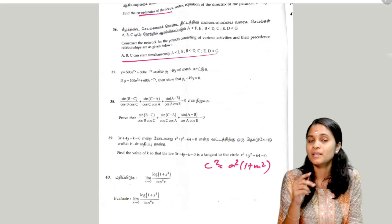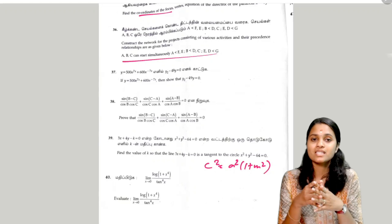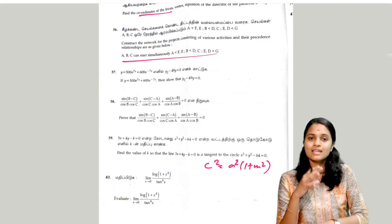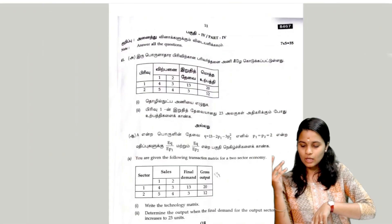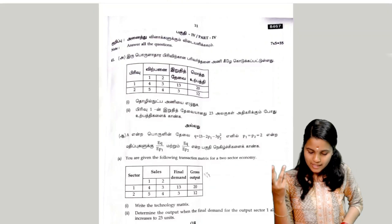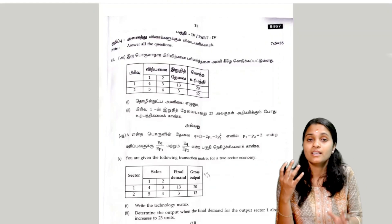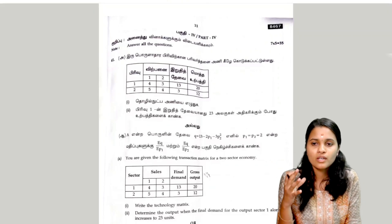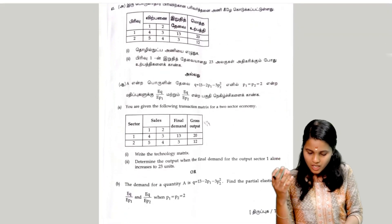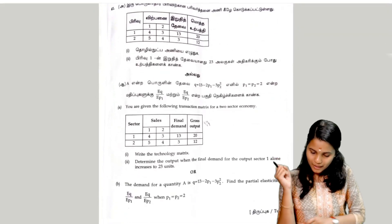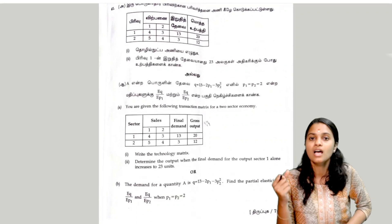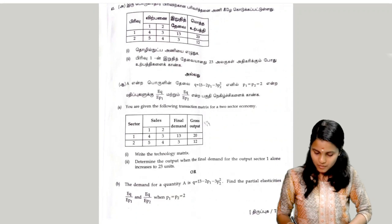The next question is the limit function — check out the limit values. The next question is question 41, part 4: if we have the question, we can find the easiest version. First, we have a transition matrix of a 2-sector economy — just calculate the solution.